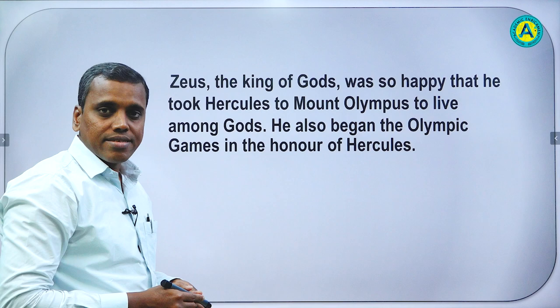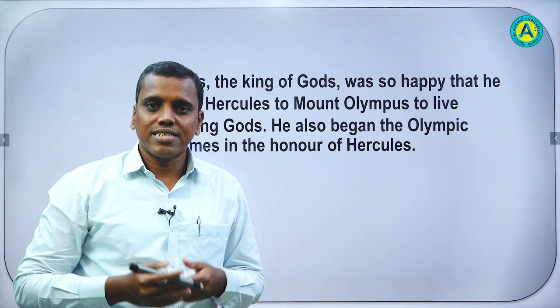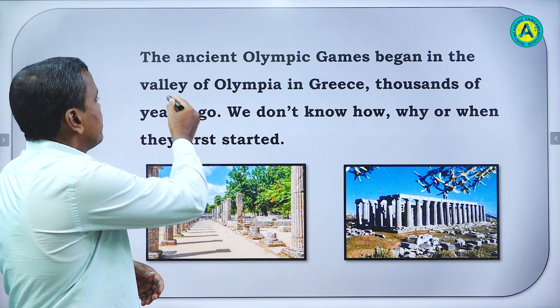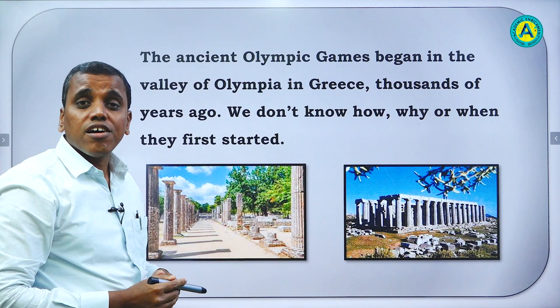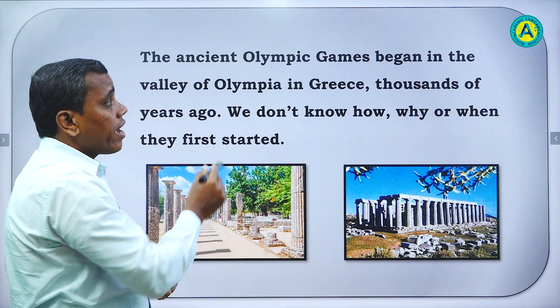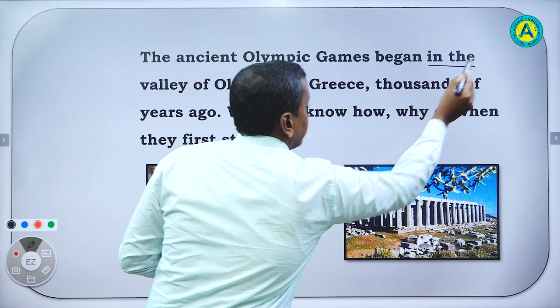Students, you have to practice reading the text aloud. Now we will read it in some more detail. The ancient Olympic games began in the valley of Olympia in Greece thousands of years ago. So, when did the games begin? Thousands of years ago. And where? In the valley of Olympia, in Greece.